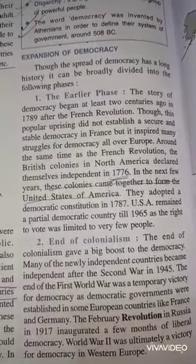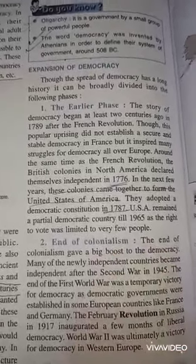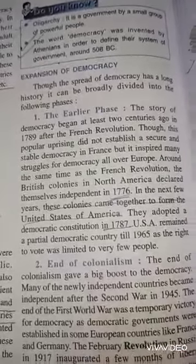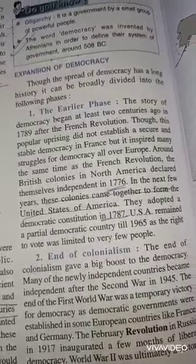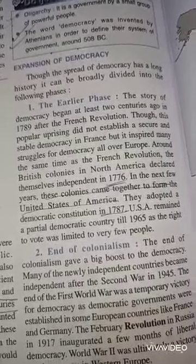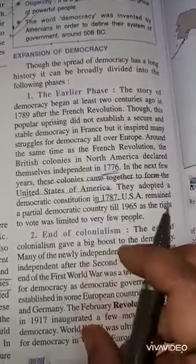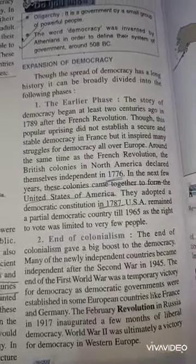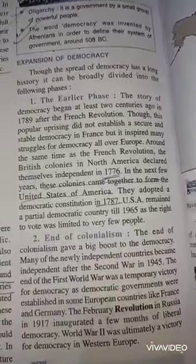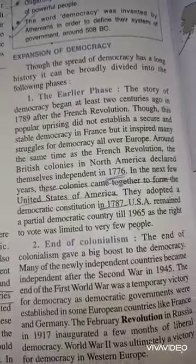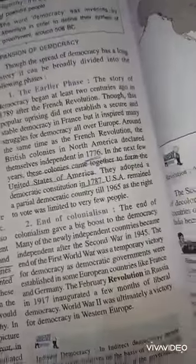They adopted a democratic constitution in 1787. USA remained a partial democratic country till 1965, as the right to vote was limited to very few people — that is why it was considered only a partial democracy.